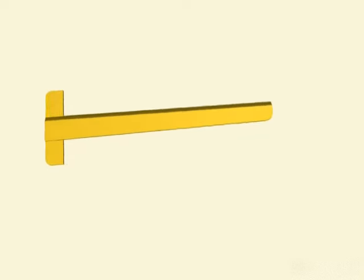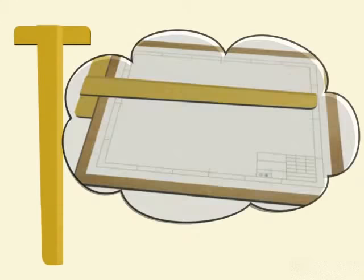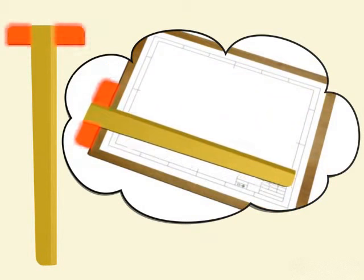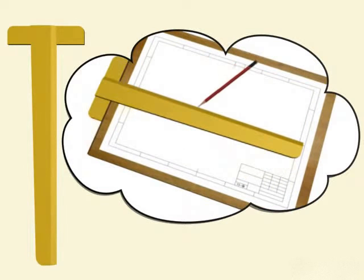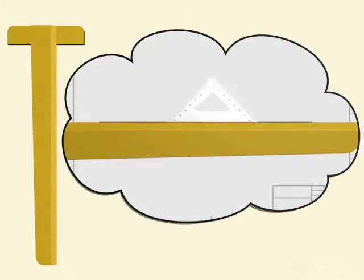The T-square, as the name suggests, is a T-shaped drawing tool. Its straight edge slides along the width of the drawing board with the help of a stop. It is useful in drawing straight lines, and also serves as supporting edge for set squares while drawing inclined lines.